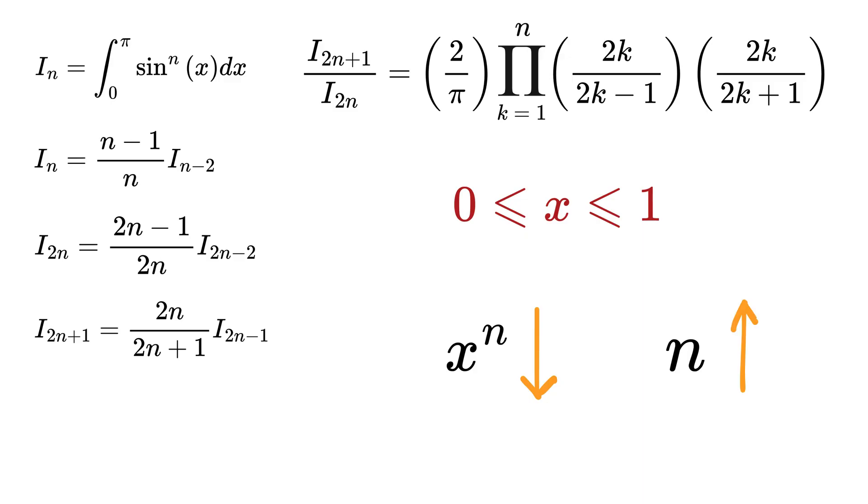We know that if any value x is in the range 0 to 1, then x^n decreases as n increases. Like if we take x as 1/2, so x will be greater than x^2, which will be 1/4, and x^2 will be greater than x^3, which will be 1/8, right?